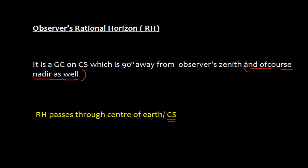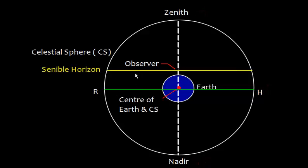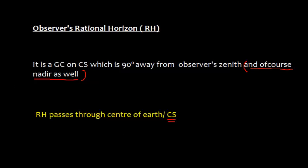We have one more horizon called the sensible horizon. The sensible horizon passes through the observer's eye. Since a great circle passes through the center of a sphere, and the sensible horizon does not pass through the center, the sensible horizon is a small circle which passes through the observer's eye. We can see that the rational horizon is parallel to the sensible horizon.